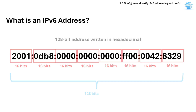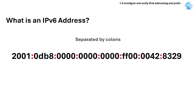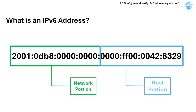The 8 groups are separated by colons. IPv6 consists of two parts: the network portion and the host portion. The network part is used to identify the network and is used for routing, while the host part is used to identify the host itself.